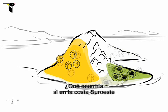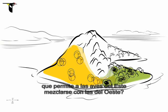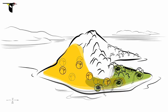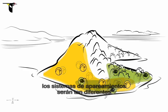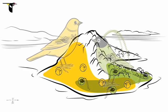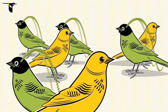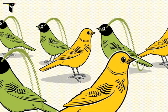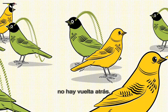What if the southwestern slope erodes into a low peninsula, allowing southeastern birds to mix with the western birds? By this time, their mating systems are completely different, and the two species can't create fertile offspring. Now related species can co-exist. But because they no longer successfully interbreed, there's no going back.